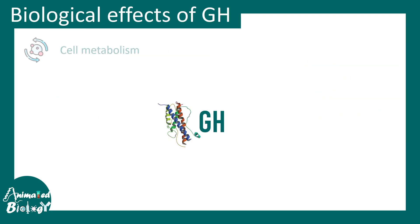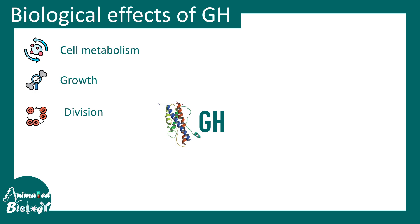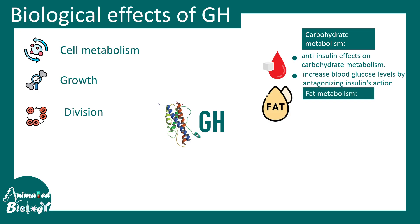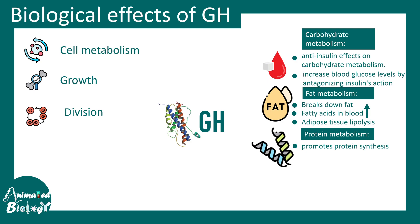Growth hormone imparts its biological effects at several levels. It alters metabolism by regulating carbohydrate, protein, and fat metabolism. It has an anti-insulin effect on carbohydrates — raising blood glucose rather than lowering it. For fat, it triggers lipolysis, releasing fatty acids into the blood. For protein, it has a strong anabolic effect, increasing protein production and muscle growth.